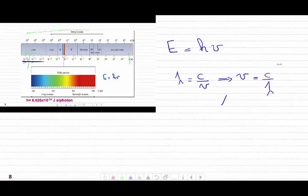So what I'm going to do is substitute c over lambda for the frequency. So the energy of an electromagnetic radiation is hc over lambda.